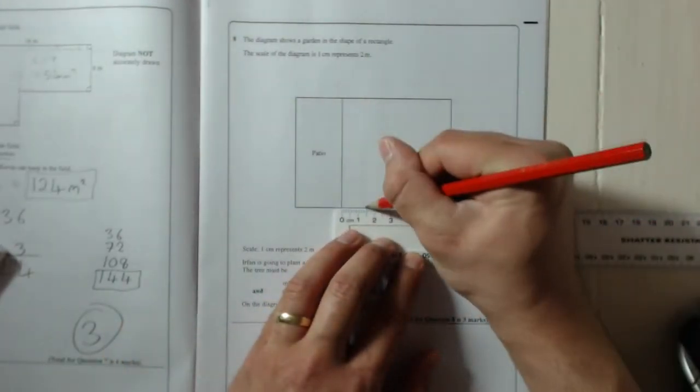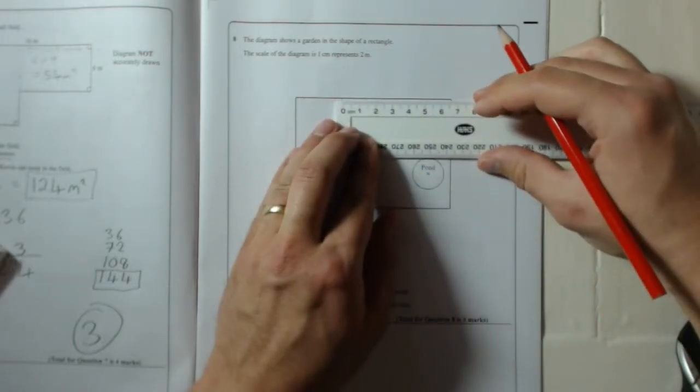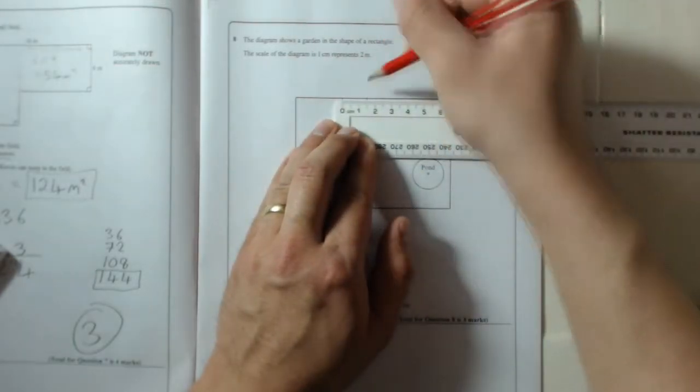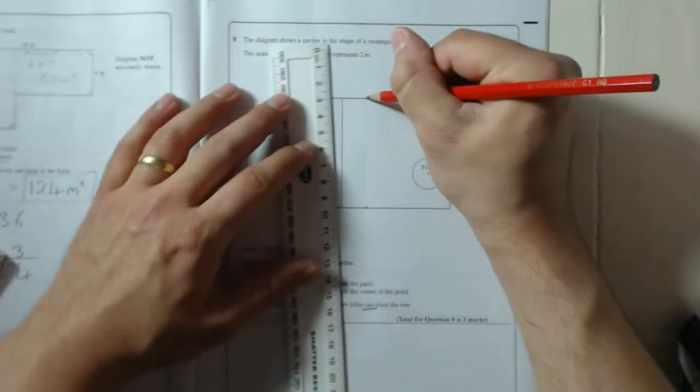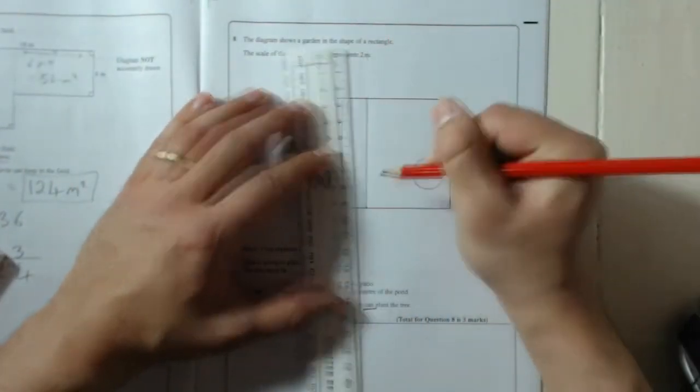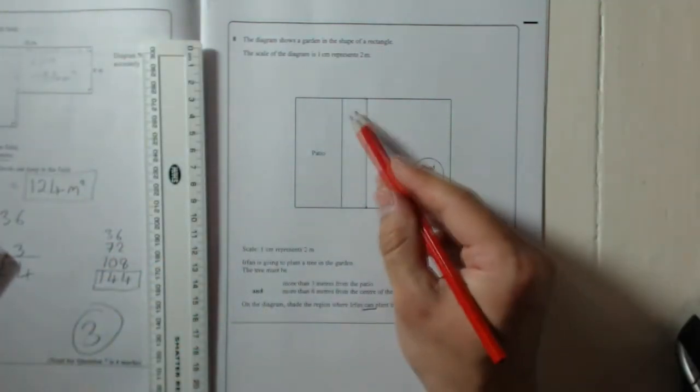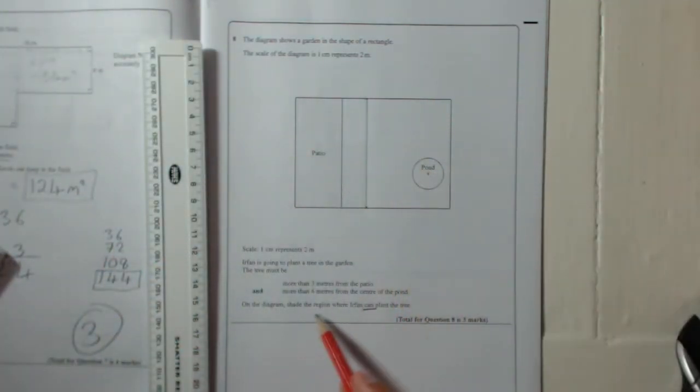So there is 1.5 down there, and there is 1.5 up there, and don't forget to start from zero, not the edge of the ruler. Draw a straight line. So it can't go in there, don't shade it in there, because it says shade the region where Urfan can plant the tree.